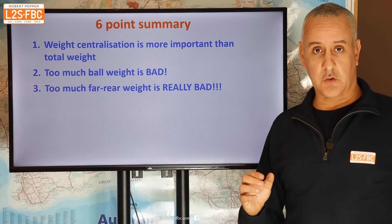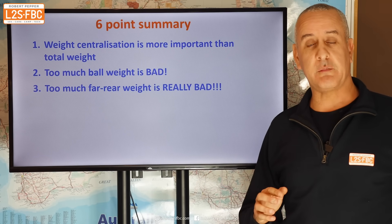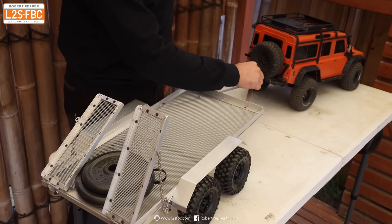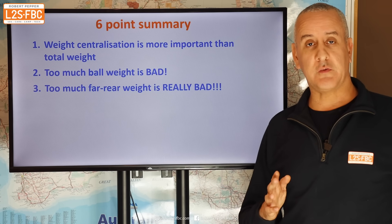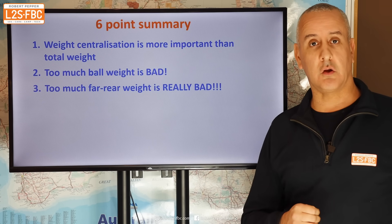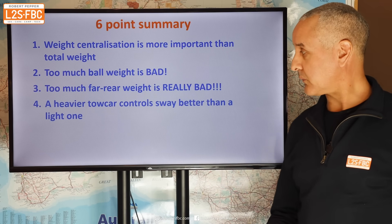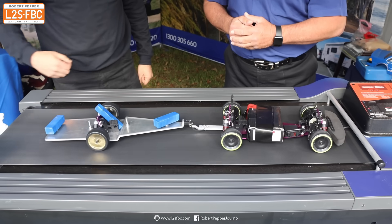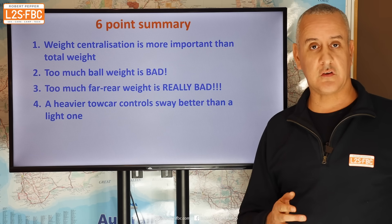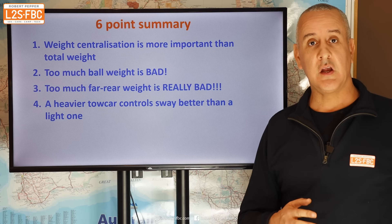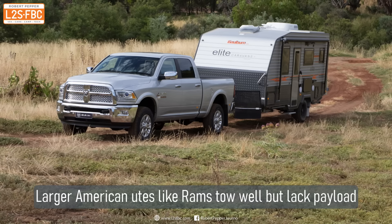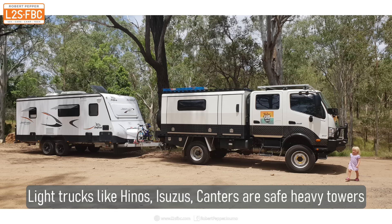Three: too much far rear weight is really bad, because that reduces grip on your rear wheels, which do the bulk of keeping your vehicle going in a straight line and controlling the trailer. Four: a heavier tow car is better. Heavier vehicles like the Land Cruiser 200 series, the Y62, the big American trucks like the Rams, and light trucks like Canters, Fusos, and Hinos are the best vehicles for towing heavy trailers. There's a rule of thumb that the tow car should be heavier than the trailer — we don't follow that in Australia, but it's still good advice.